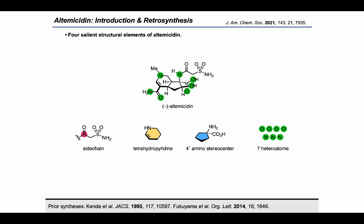Lastly we noted the seven heteroatoms decorating altemicidin's core. In contrast to prior synthetic approaches by Kende in 1995 and Fukuyama in 2014, which proceeded in approximately 30 steps each, we aimed to install nearly all of these heteroatoms within the first steps of the synthesis in a convergent manner. In this way we hoped to avoid the redox and protecting group intensive steps of the prior routes.